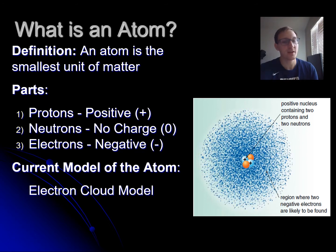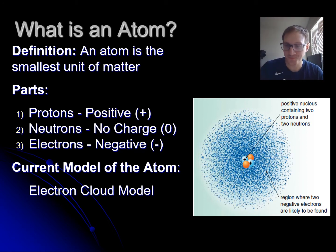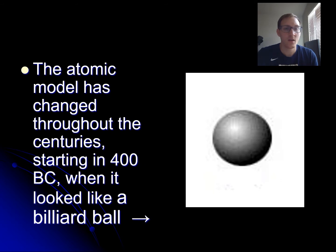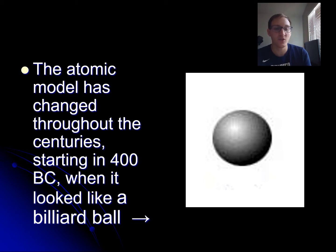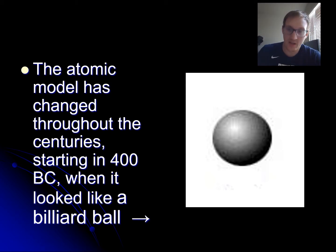The atomic model has changed throughout the centuries, starting in 400 BC when atoms were thought to look like a billiard ball. That first model is called the billiard ball model.